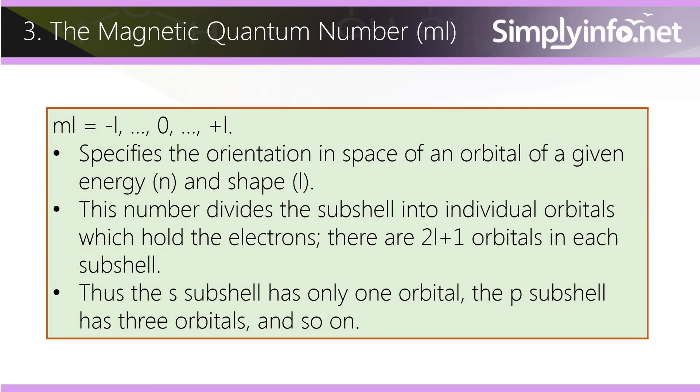The magnetic quantum number ml. ml equals minus l, 0, plus l. It specifies the orientation in space of an orbital of a given energy n and shape l. This number divides the subshell into individual orbitals which hold the electrons. There are 2l plus 1 orbitals in each subshell.